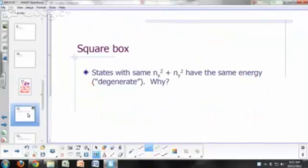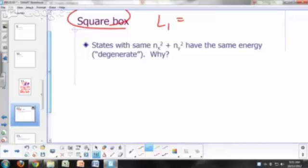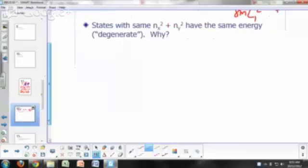Let's look at what happens if you have a square box. This means your L1 must be equal to L2. So your alpha, which is h squared over 8m L1 squared, is going to be equal to your beta. So what would be our allowed energy levels this time? What would be your ground state?